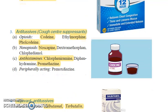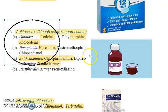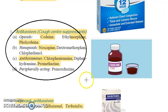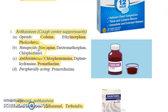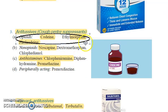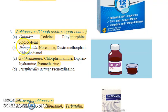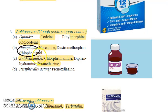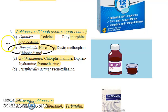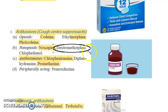Antitussives — these suppress the cough center. You have opioids: first thing that comes to mind is morphine, then ethylmorphine, codeine, and folcodeine. Then you have non-opioid drugs like noscapine and dextromethorphan.